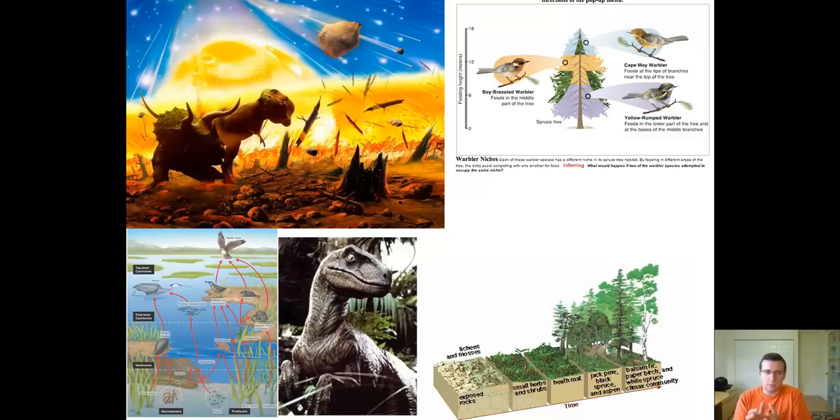Also, the smaller animals tend to be the ones that survive usually mass extinctions because they didn't need to eat as much. The biomass is smaller than those of larger organisms.